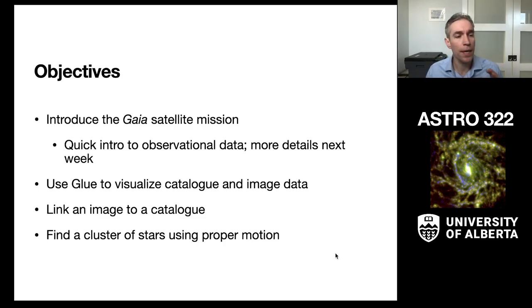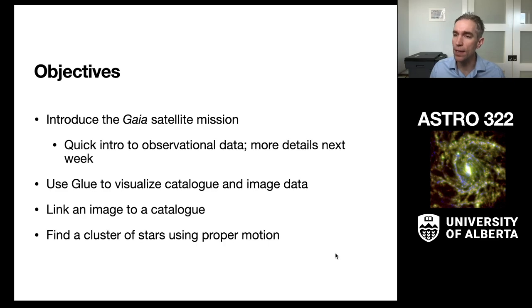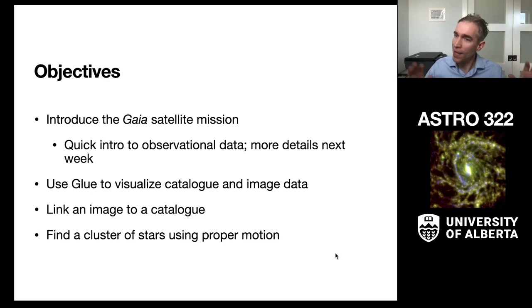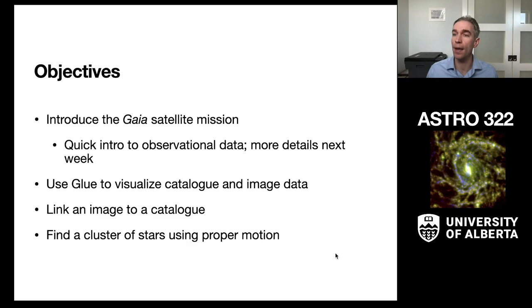Critically, we're going to introduce a new tool for our data set: the Glue software tool, which allows us to visualize catalog and image data. It's going to be very useful for doing a lot of the analysis we'll be working with over the coming semester. Our goals today are to grab some data on a nearby star cluster, link the data from an image and a catalog, figure out where that cluster of stars is using proper motion, and ultimately characterize the distance to that cluster using the Gaia data.